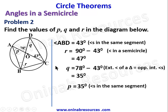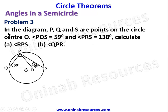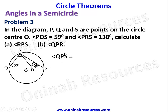Problem three: in the diagram, P, Q, and S are points on the circle with center O. Angle PQS is 59 degrees and angle PRS is 138 degrees. We need to calculate angle RPS and angle QPR. We can see that QS is the diameter, therefore angle QPS is 90 degrees — angle in a semicircle.